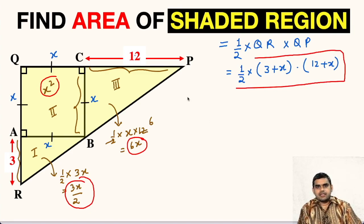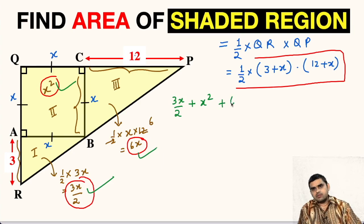Let us equate them. The first area was 3X upon 2. Second one was X square, so plus X square. The third one was 6X, plus 6X equals half times 3 plus X multiplied with 12 plus X.